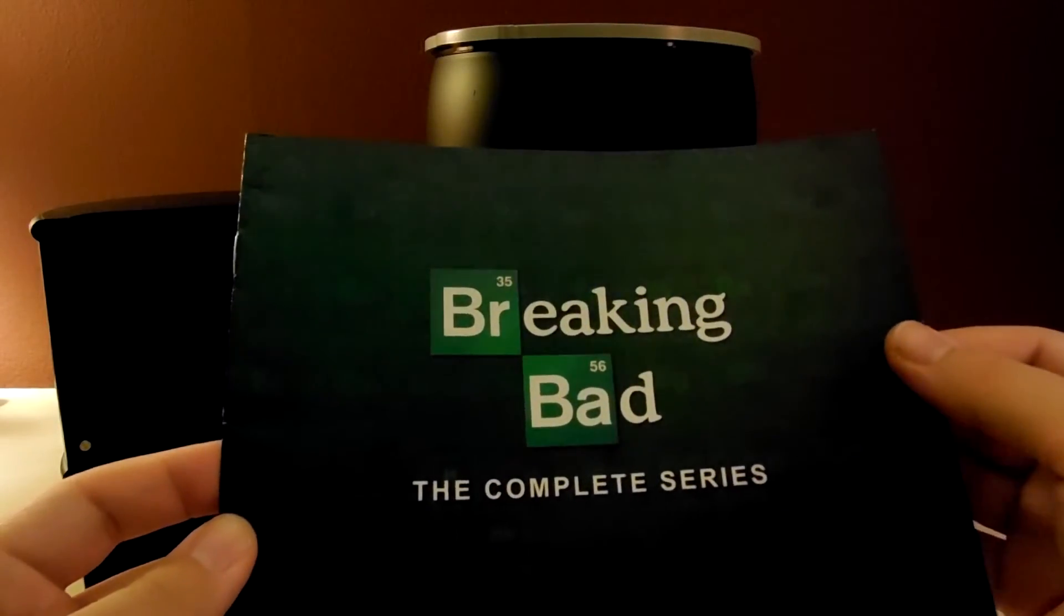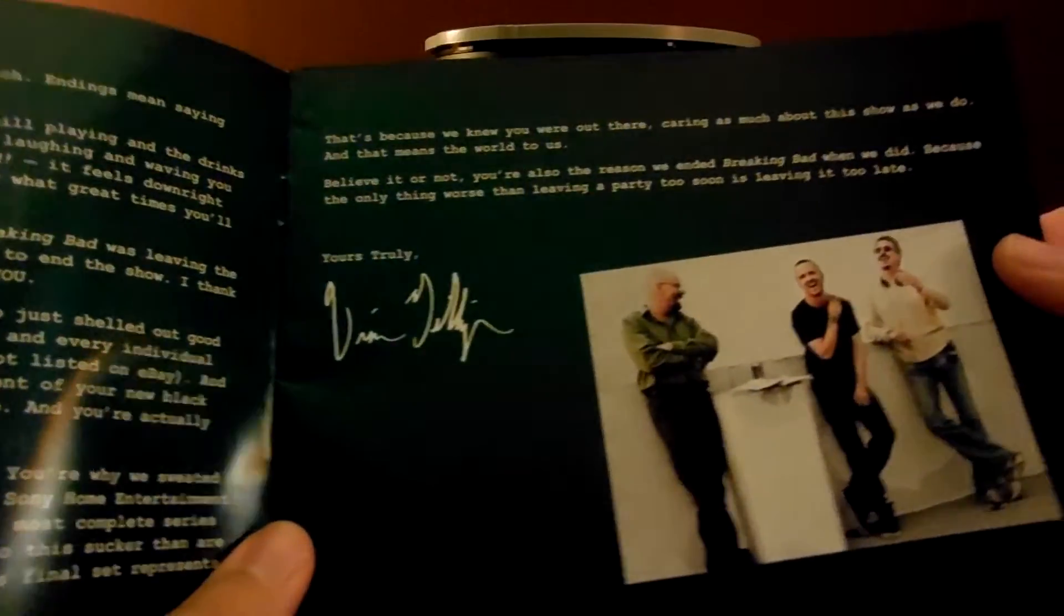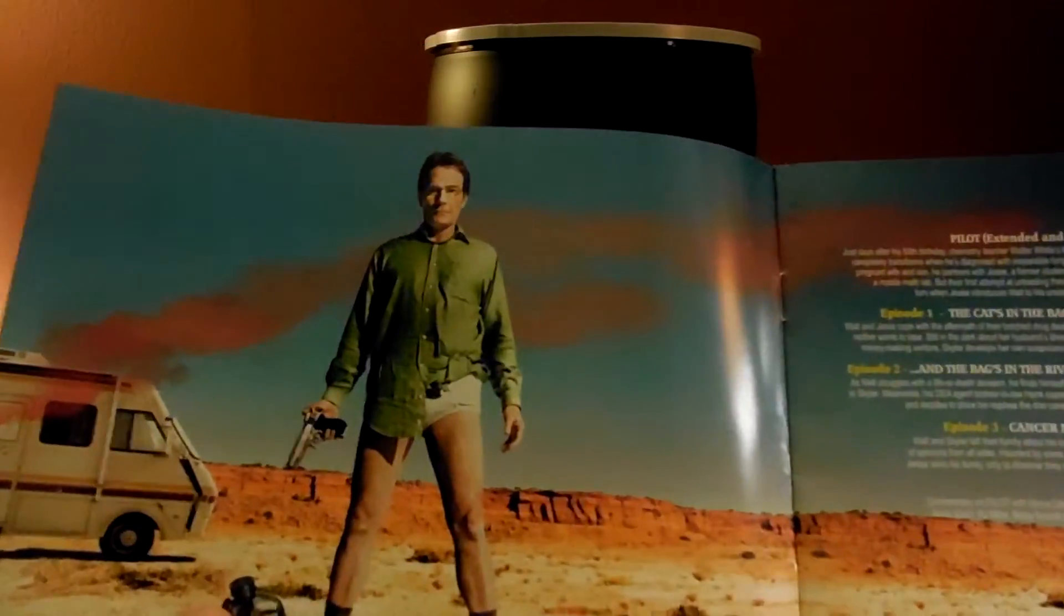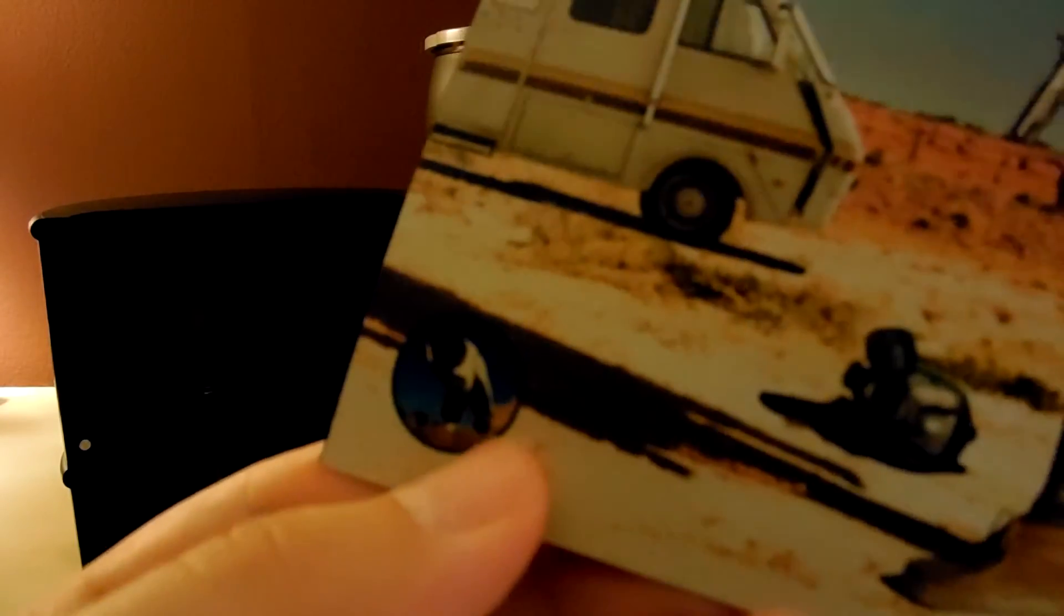Then the episode list and stuff. There's a little message from Vince Gilligan, which is that's him right there talking to Aaron Paul and Bryan Cranston. Season one with a list, episode list. Actually in the corner there, it'll show you what the disc looks like. That's the pants.